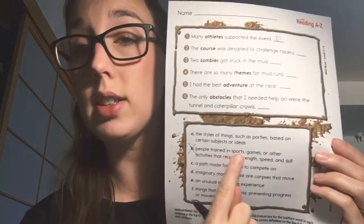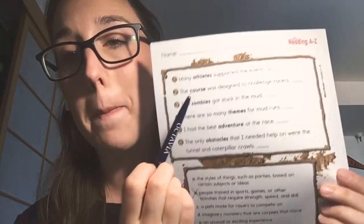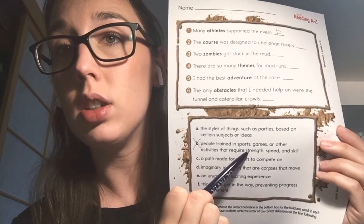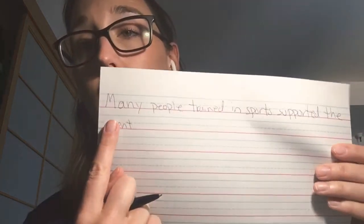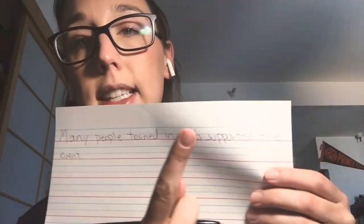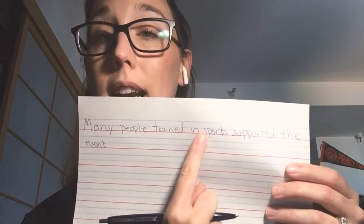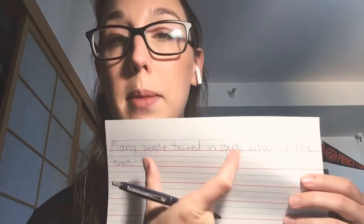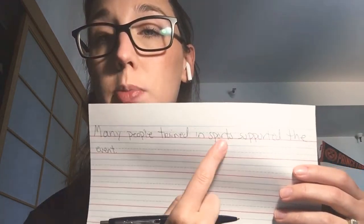What I can do is take part of this definition and use that to write: 'Many people trained in sports supported the event.' That works. So I start my sentence the same — 'Many' — I end it the same — 'supported the event' — but what I'm doing is adding a synonym or a new phrase in the middle where that bold word is. You'll do that for all six of the sentences.